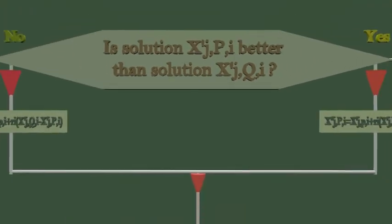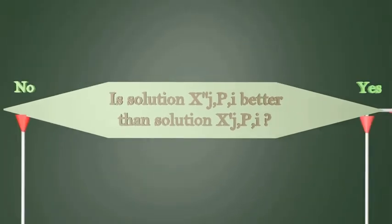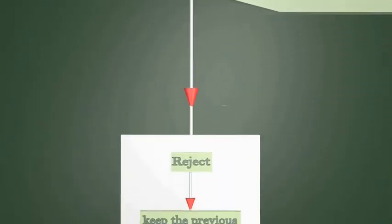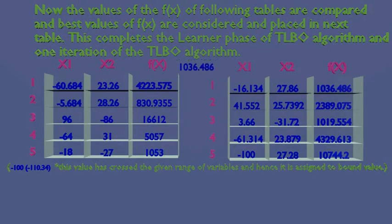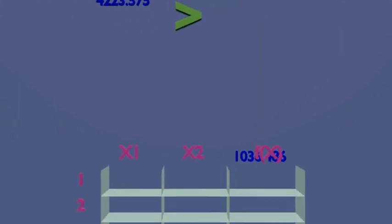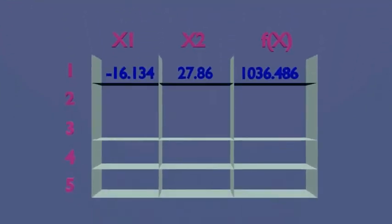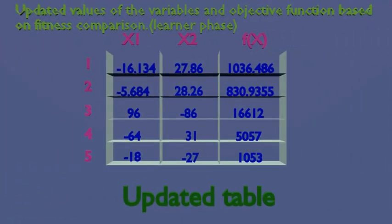Now we are moving to the next step: compare the two previous tables and update the solutions. If the solution x double dash of jpi is better than x dash of jpi, accept and replace the previous; if not, reject and keep the previous. The values of f(x) of the following tables get compared as shown, and the best or minimum value gets placed in the next table. This completes the learner phase and one iteration in the algorithm. The minimum value for f(x) is getting updated, and the corresponding values of x1 and x2 are also updated. All remaining comparisons are done in a similar manner and we get the final updated table based on fitness comparisons.